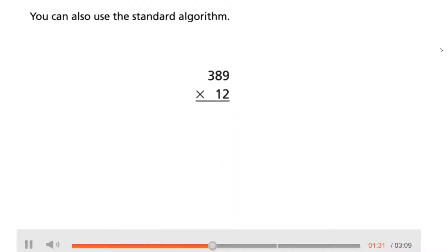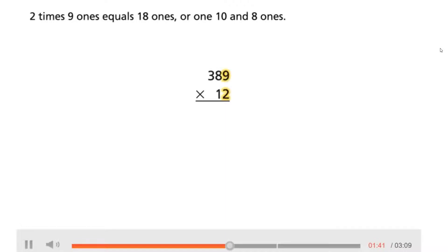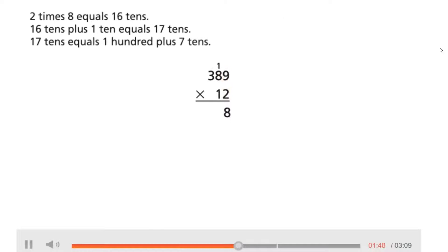You can also use the standard algorithm. First, multiply the ones and regroup if necessary. 2 times 9 equals 18 ones, which is 1 ten and 8 ones. Then 2 times 8 equals 16 tens. 16 tens plus 1 ten equals 17 tens. 17 tens equals 1 hundred plus 7 tens.